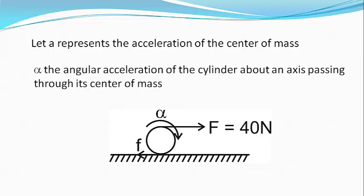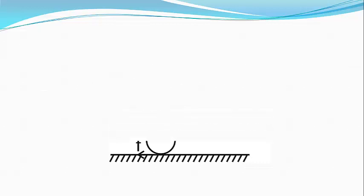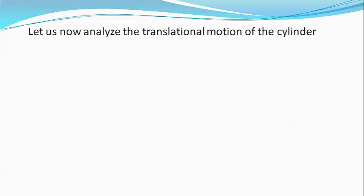Analyzing the translational motion of the cylinder, we get capital F minus small f is equal to capital M into A or 40 minus F equals 5 into A. Equation 1.